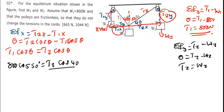I divide this by cos 40, even here by cos 40, so this will cancel out. Therefore my T2 will be equal to 800 cos 50 divided by cos 40.